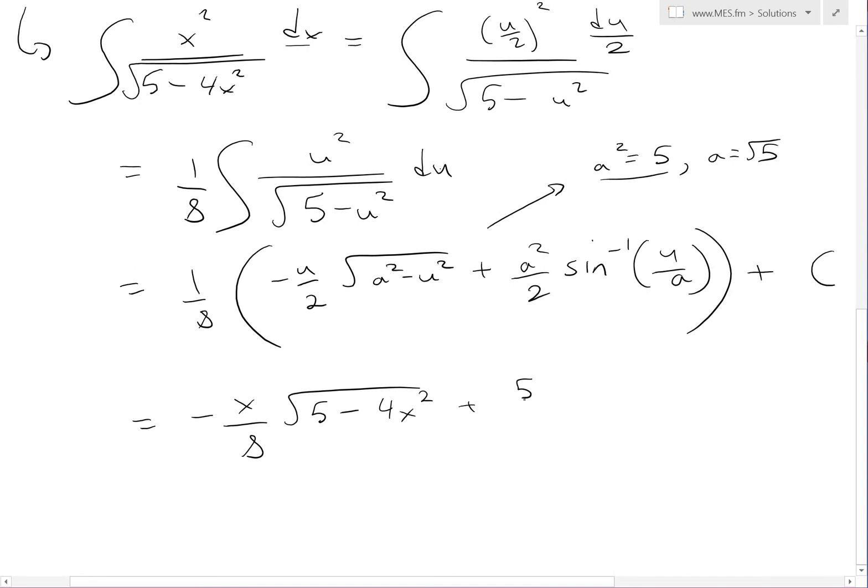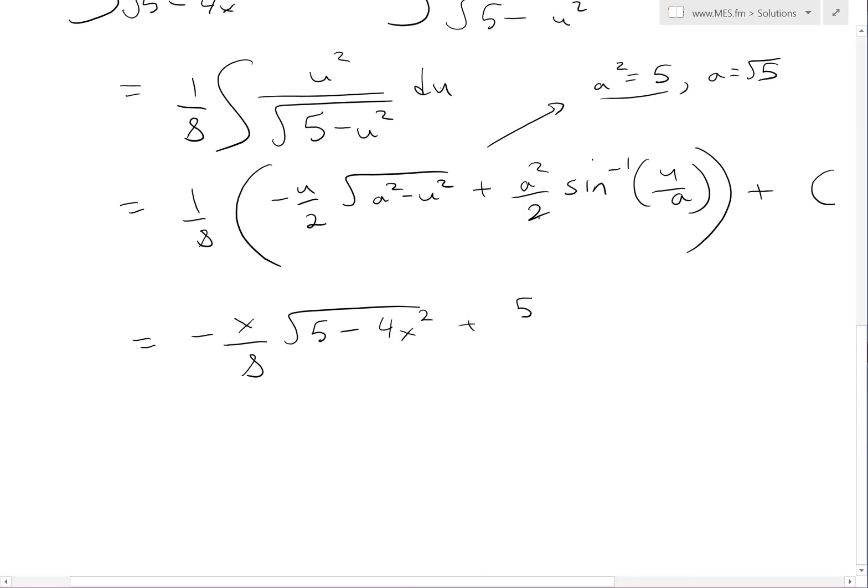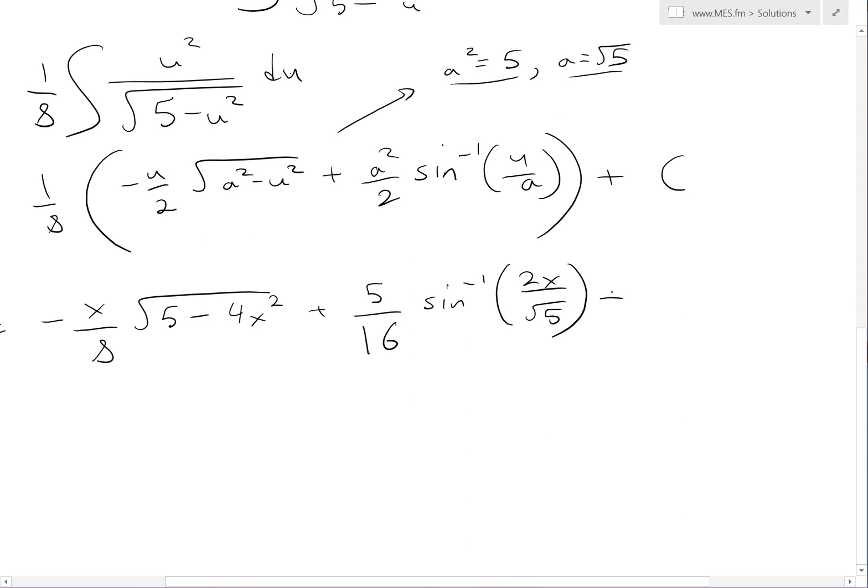This is 1 over 16. Now we have inverse sine of u, which equals 2x, over a, which equals square root 5, and then we have a constant c.